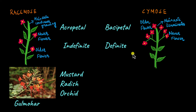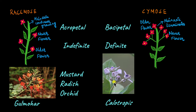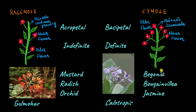Examples of cymose inflorescence include calotropis — here the older flower is at the top where the main axis has terminated, and below it newer flowers are beginning to grow. Other examples include begonia, bougainvillea, and jasmine, and even the bladder campion example we saw earlier in the video also displays this cymose type of inflorescence.